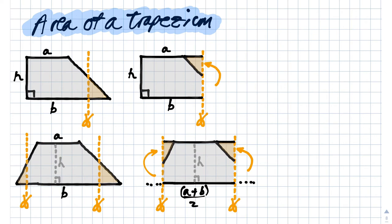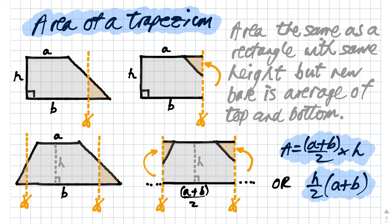So we say it is half of a plus b. The area ends up being half of a plus b times the height, which is often also written as area equals h over 2 times a plus b.